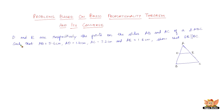The first question reads: D and E are respectively the points on the sides AB and AC of a triangle ABC such that AB equals 5.6 centimeters, AD equals 1.4 centimeters, AC equals 7.2 centimeters, and AE equals 1.8 centimeters. We need to show that DE is parallel to BC. We have the lengths of AD, AB, AE, and EC, so we need to show that DE is parallel to BC.